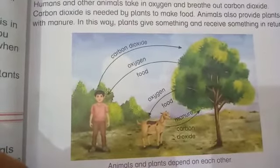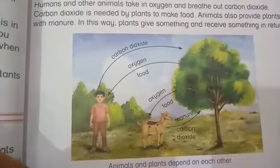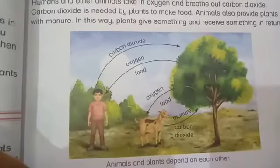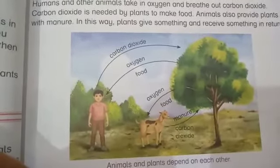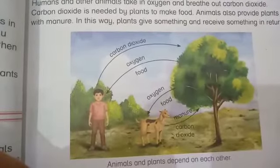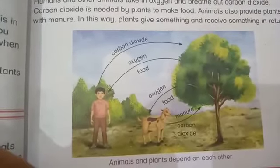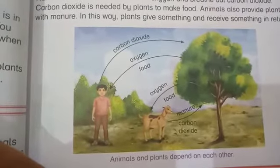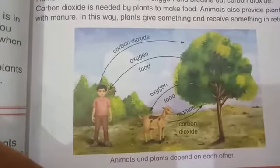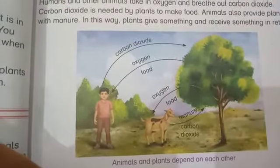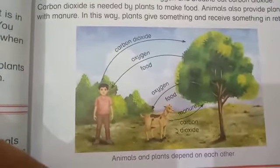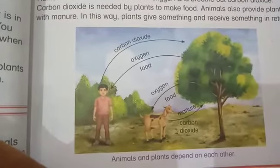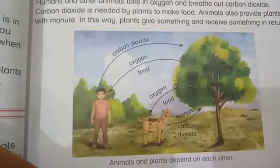Plants also provide food to animals and human beings. In return, animals and human beings give carbon dioxide to the plants, which is used by plants to make their food during the process of photosynthesis. Similarly, the manure or waste material of animals is used by plants as a natural fertilizer to increase the fertility of soil.